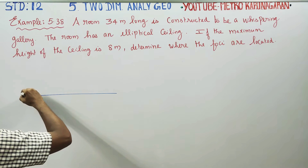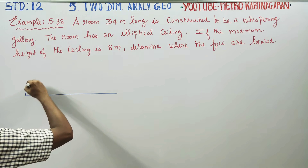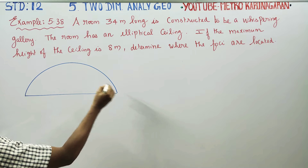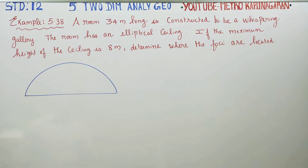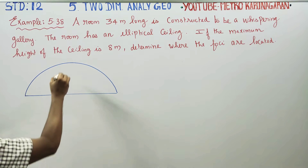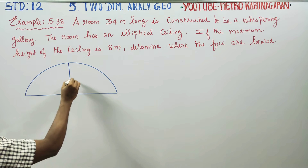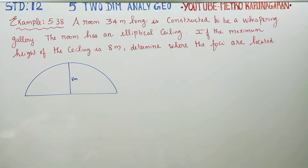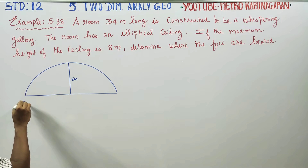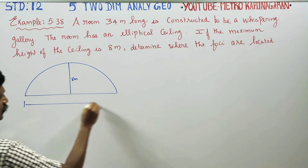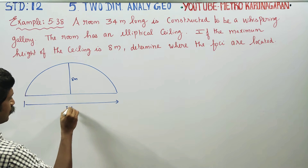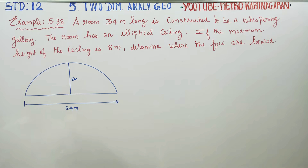The room is constructed as a whispering gallery, and the ceiling is in an elliptical shape. The maximum height of the ceiling is 8 meters, and the room is 34 meters long. Determine where the foci are located — we need to find where the focus points are.